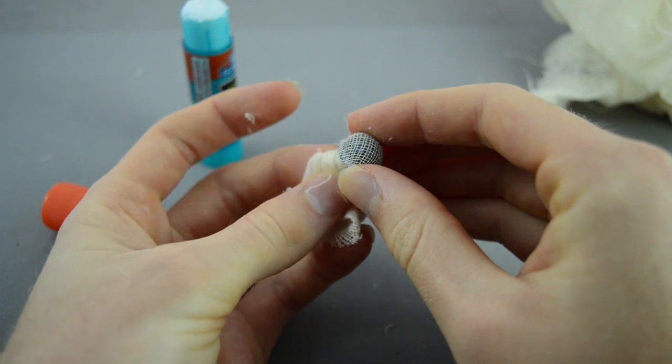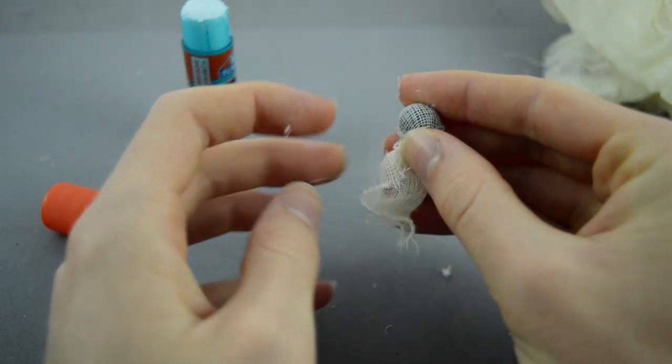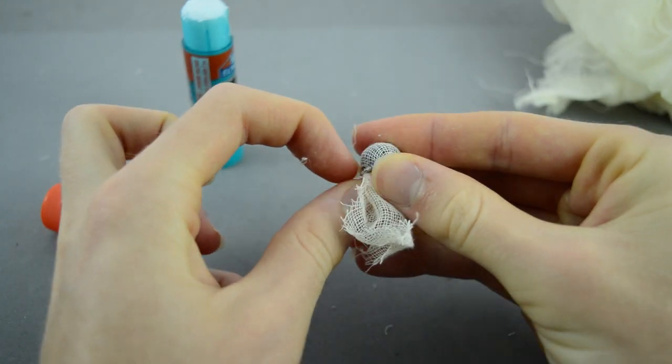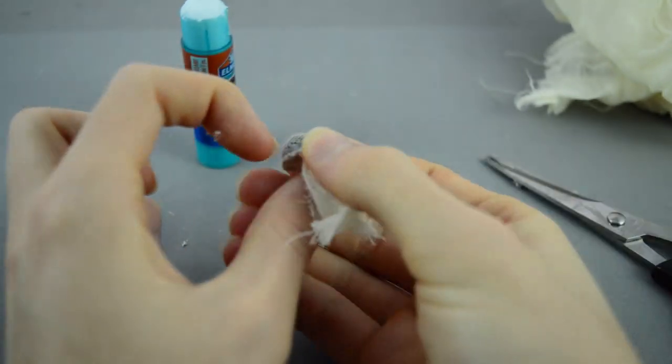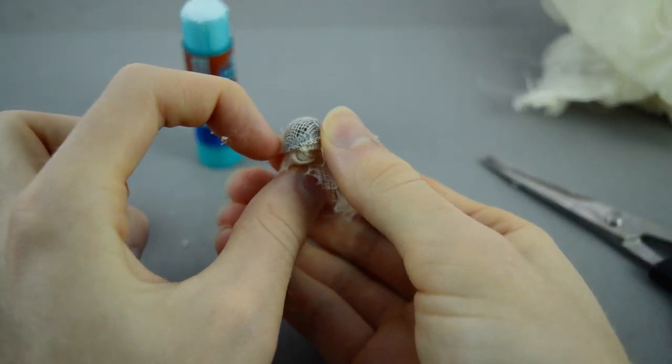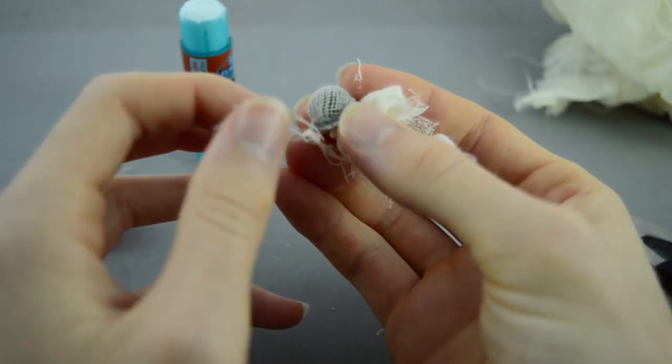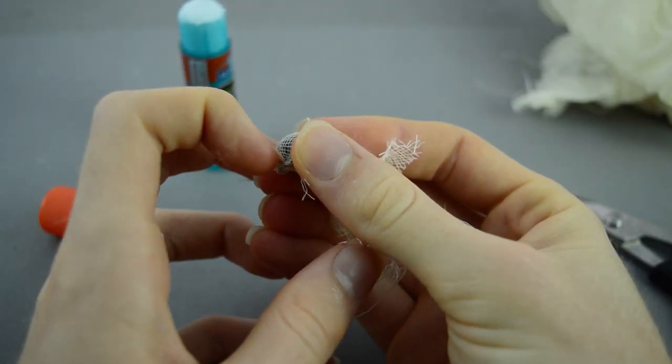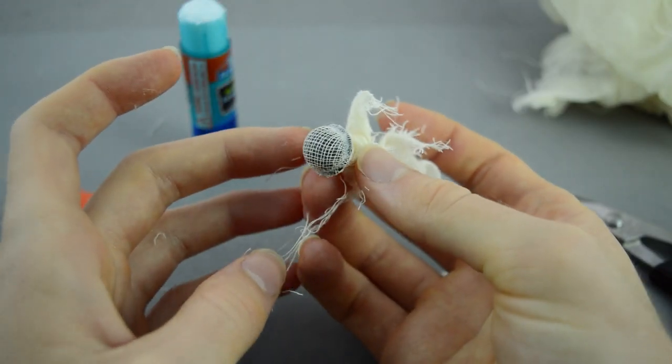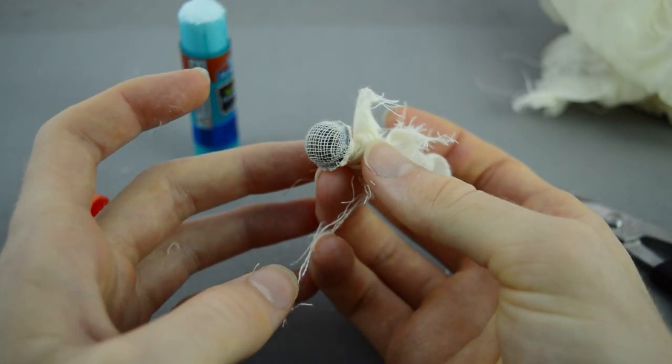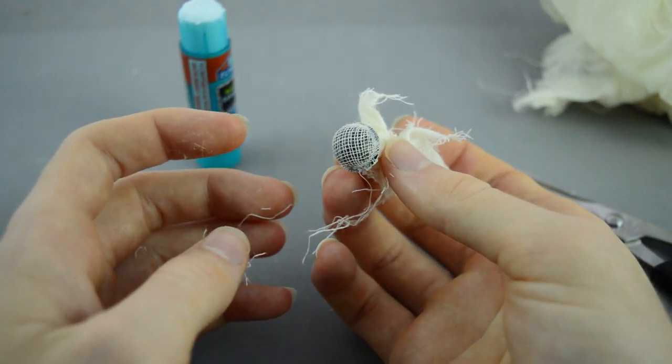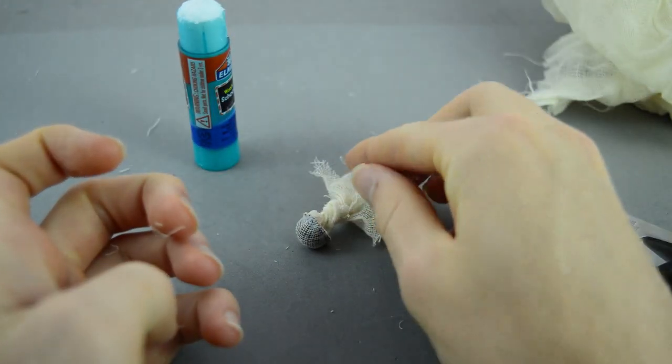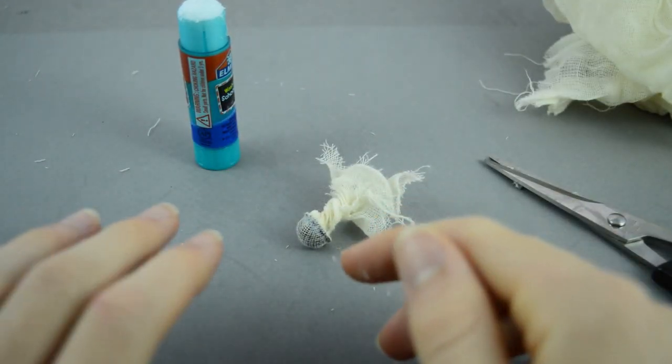Then what you want to do is take your fingernail and press the cheesecloth down into the rim of the helmet there all the way around. Once it looks good, leave it here and let the helmet sit for about five minutes, maybe ten minutes. That gives the glue a chance to dry a little bit.